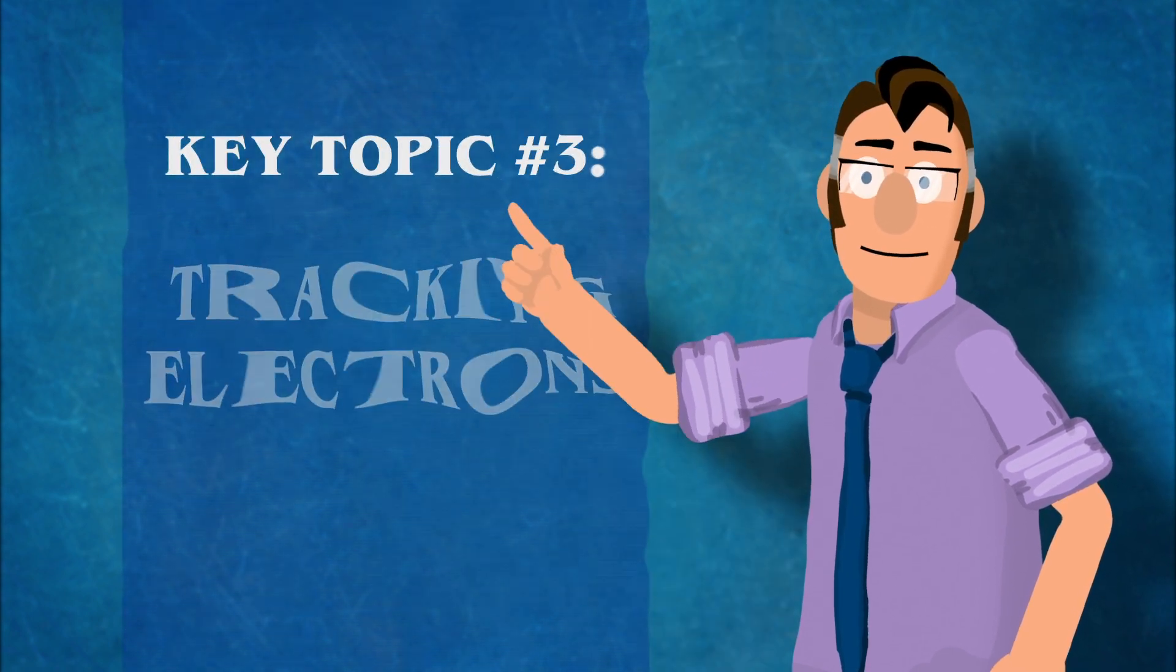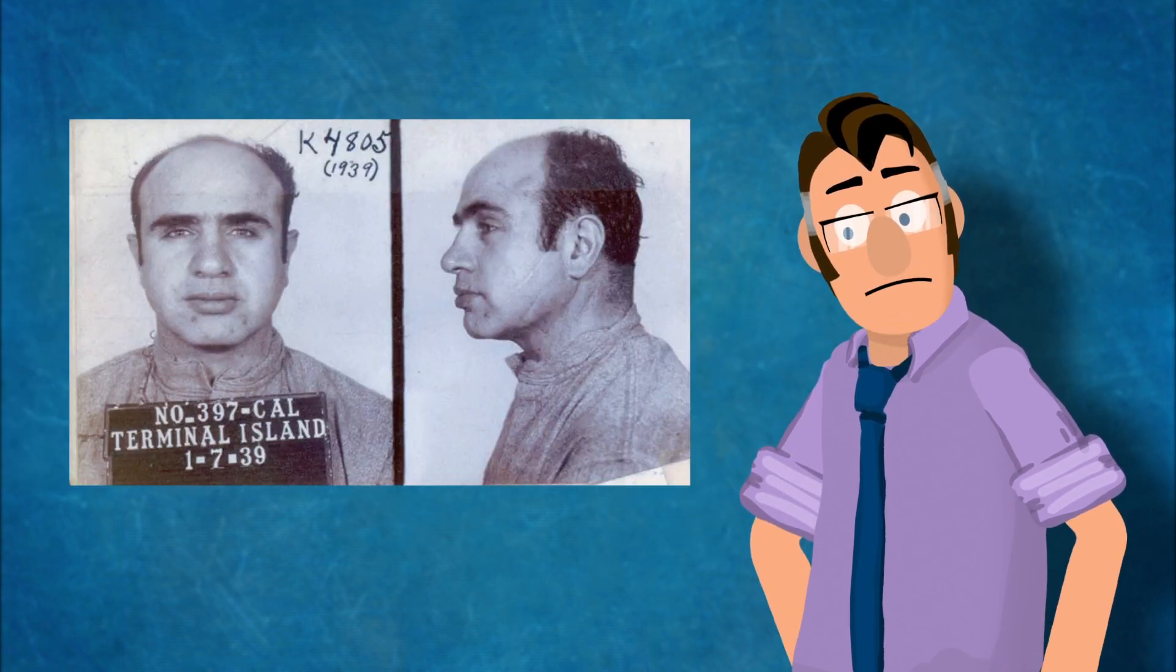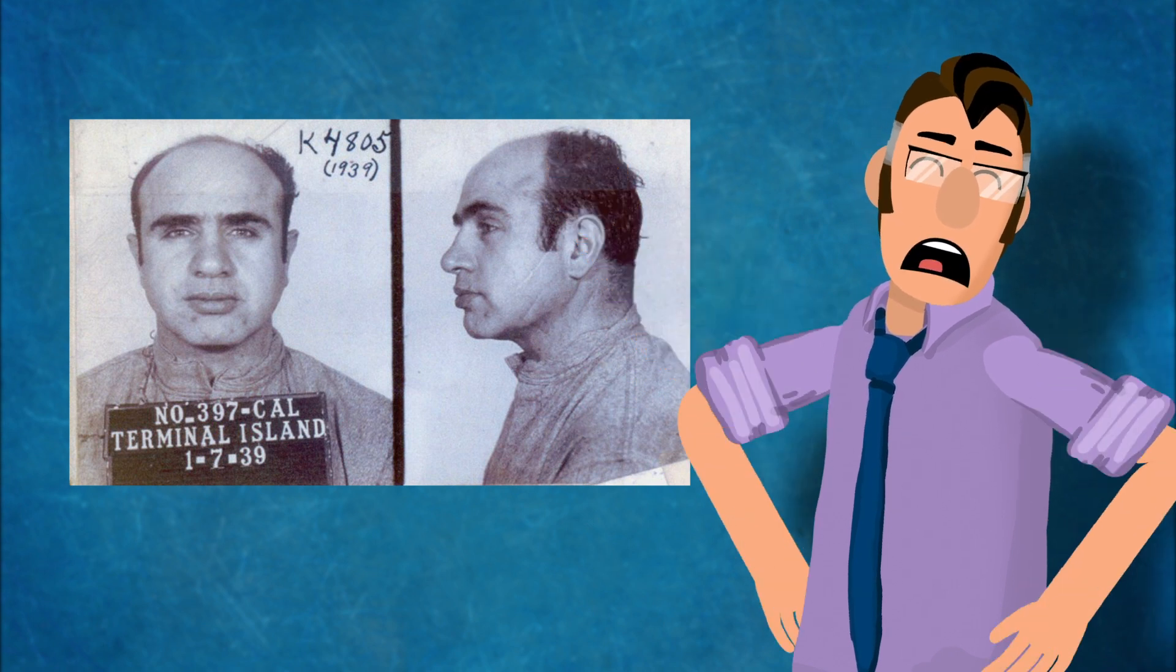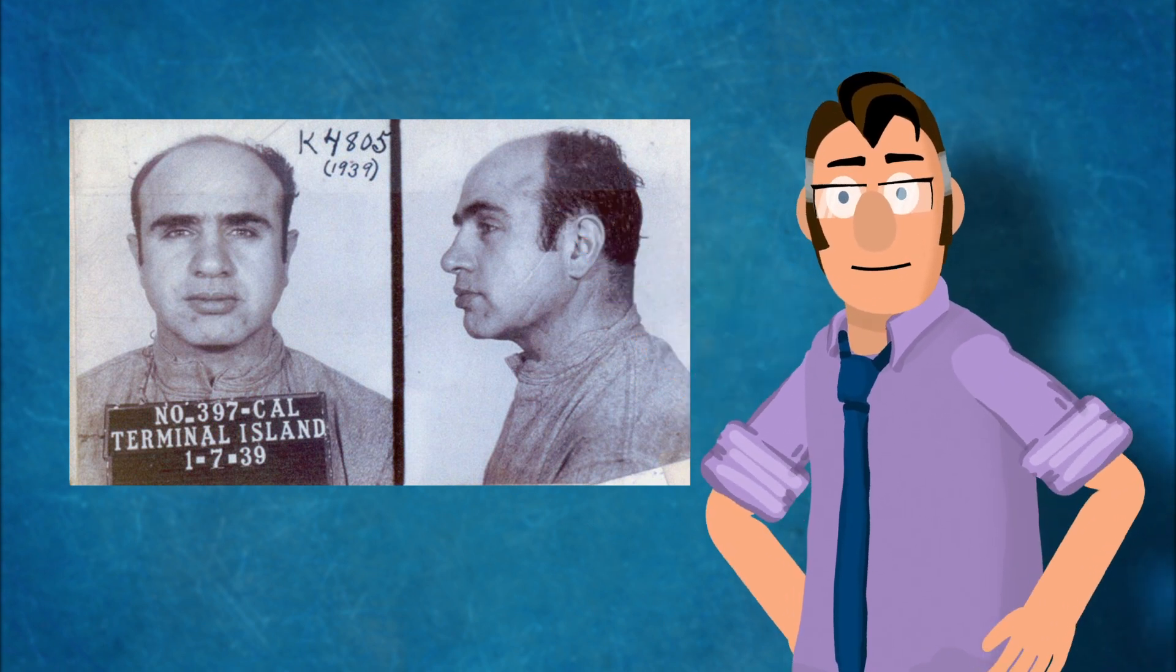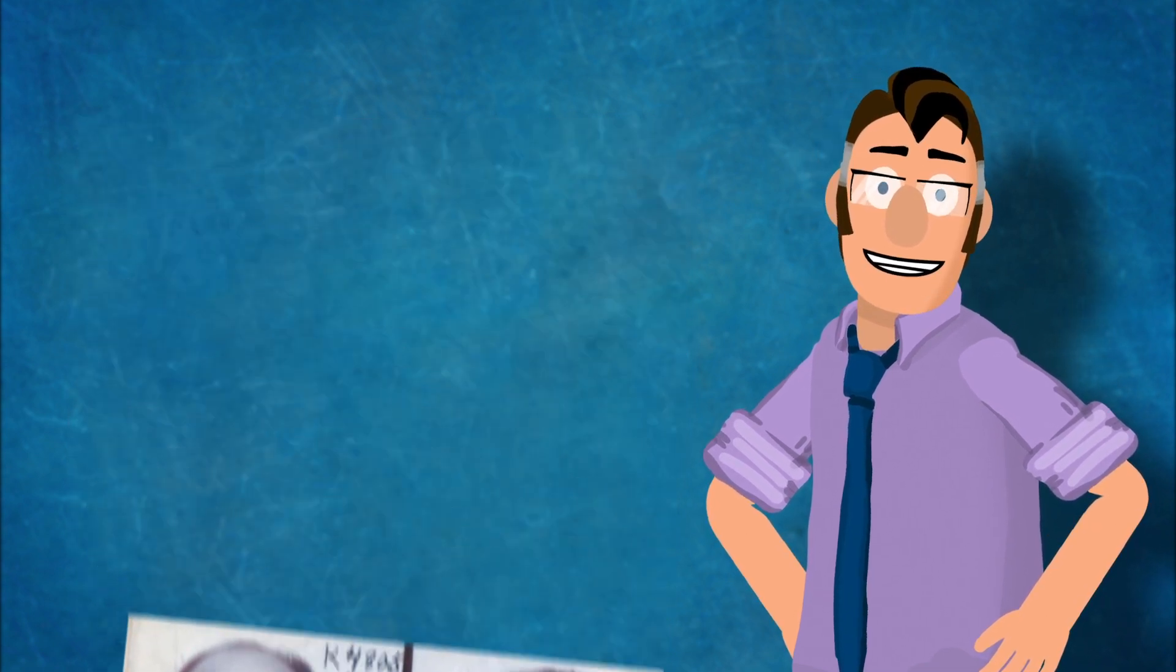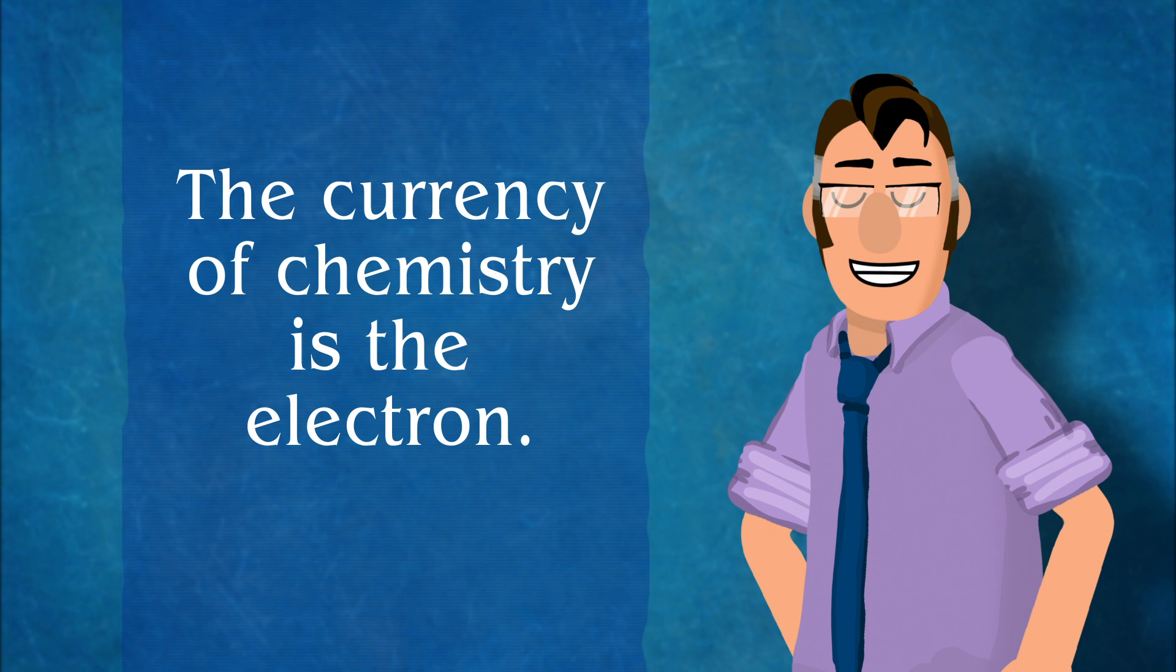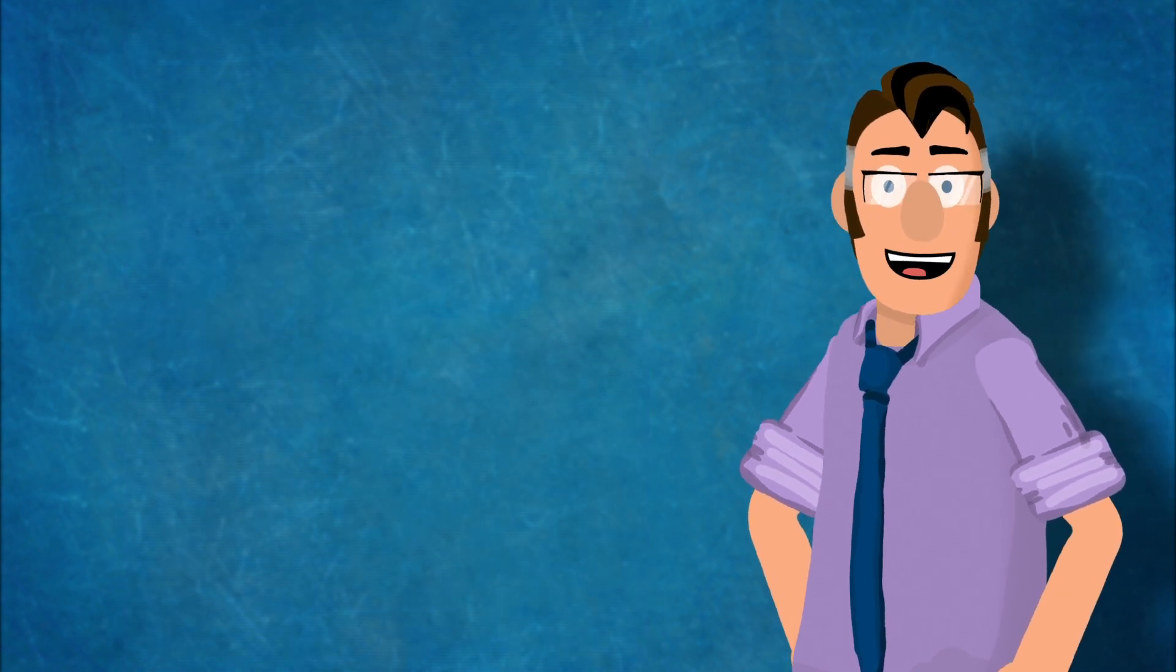Topic number three, tracking electrons. You want to know how they finally caught Al Capone? Failing to pay income tax. Now that doesn't sound glamorous, but when you can follow the currency, all kinds of things become knowable. And the currency of chemistry is the electron. Electrons determine everything.